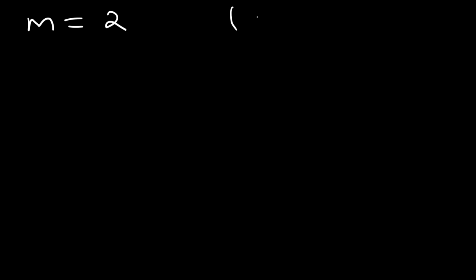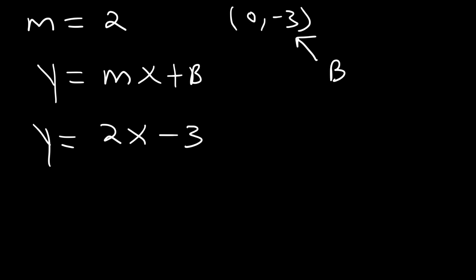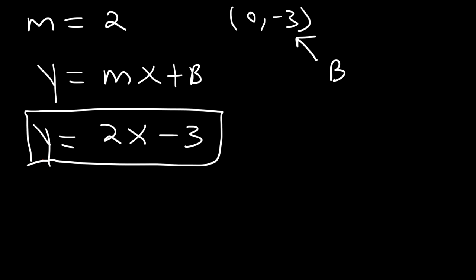The first kind of question you might see is: write the linear equation given the slope — let's say it's 2 — and the y-intercept, (0, -3). If you're given a slope and a y-intercept, the best thing to do is put it in slope-intercept form using y = mx + b. The y-intercept is the b value. So replace m with 2 and b with -3. The equation in slope-intercept form is y = 2x - 3.